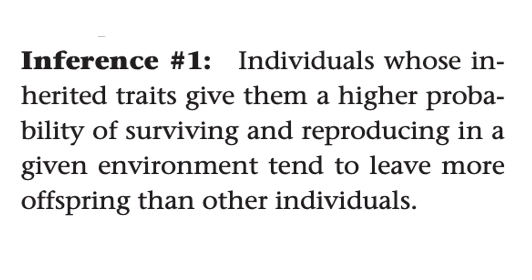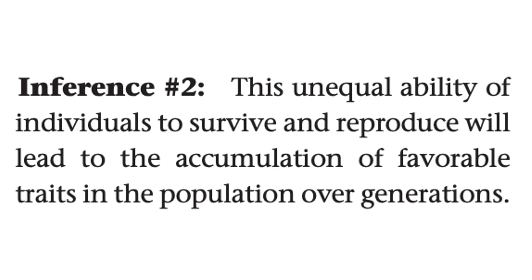Based on these two observations, Darwin came to two major inferences. First, individuals whose inherited traits provided a survival advantage would have a higher probability of reproducing, while those with worse traits would die before reproducing. Second, if traits are inherited from one generation to the next, then those with favorable traits would leave behind more offspring with those traits, which would accumulate in the population over time.